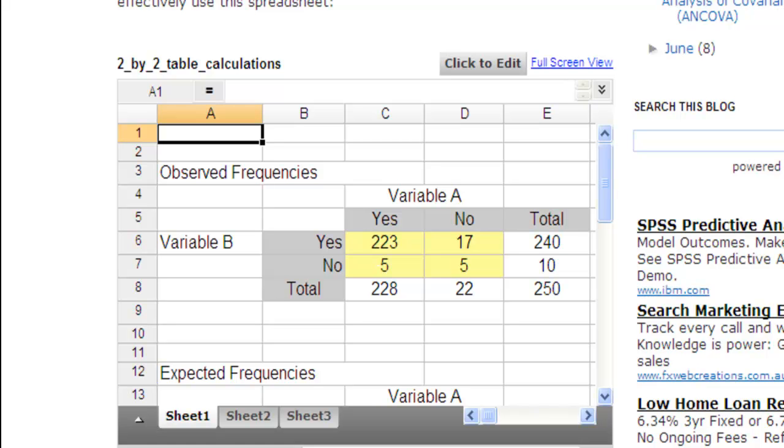Hi, welcome to HowToStats.com. In this video, I'm going to demonstrate how to use the interactive spreadsheet on the HowToStats website that will allow you to perform a 2x2 table Pearson Chi-Square analysis.